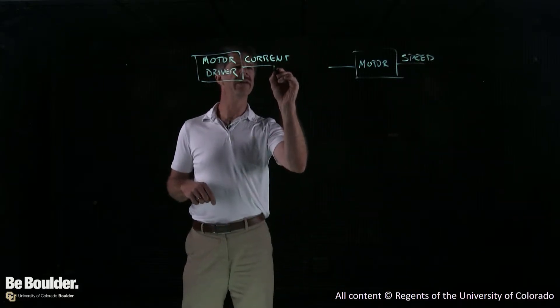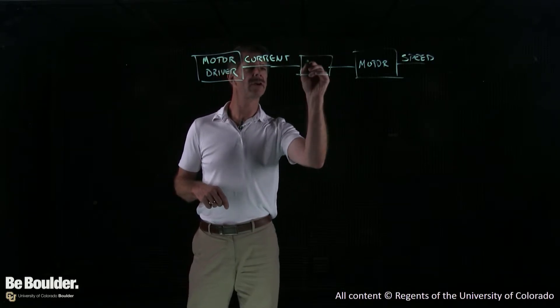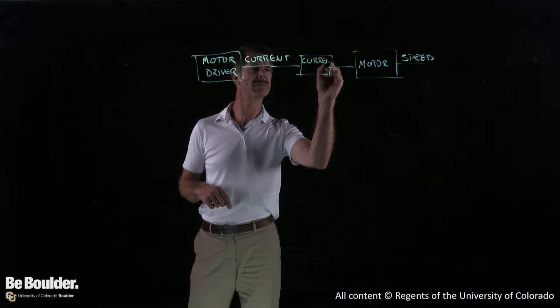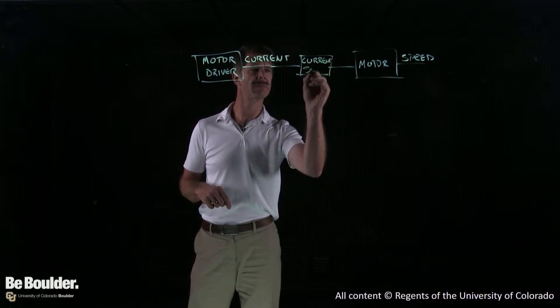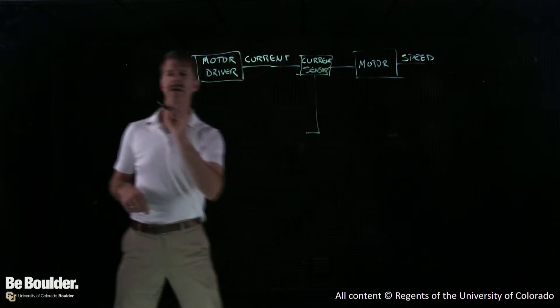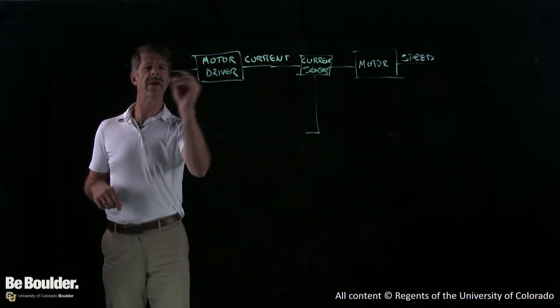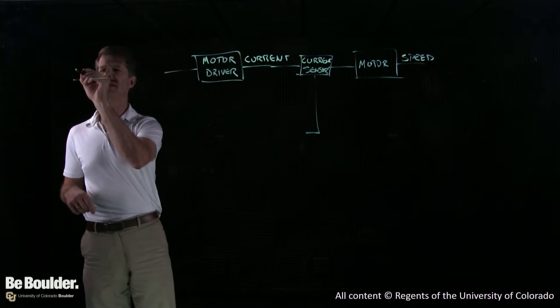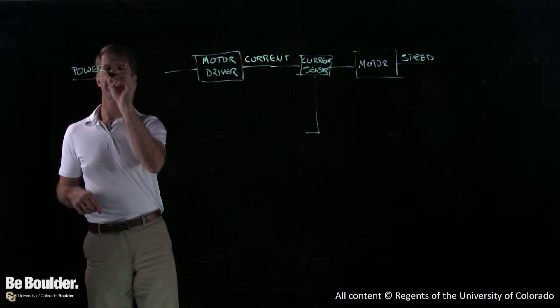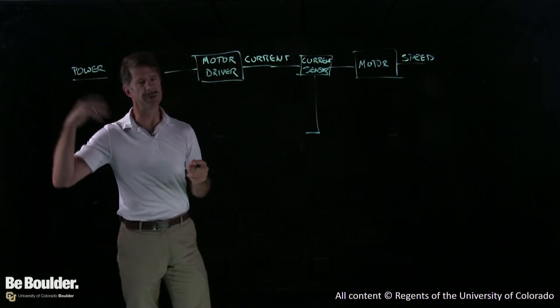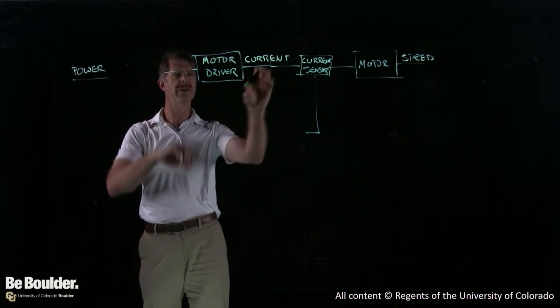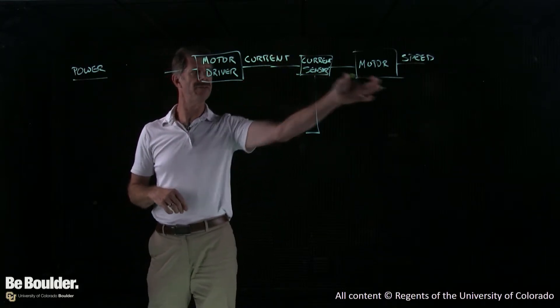We're going to put here the current sensor. And what's going in over here is the signal from the power supply, the actual power that we're putting into the motor driver. You can think about that as voltage or current or whatever you'd like, but this is what we're providing to the motor driver so it can send some current off to the motor.